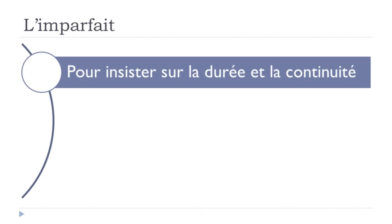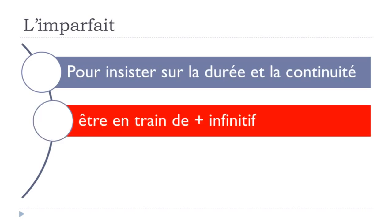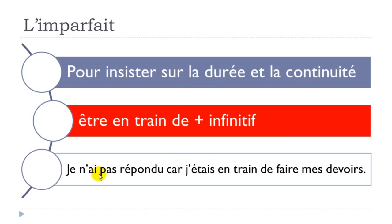To insist that something lasts and continues, we use the structure 'être en train de' plus the infinitive. For example, comparing passé composé and imparfait: 'je n'ai pas répondu' — 'répondre' means to answer — 'car j'étais en train de faire mes devoirs' — doing my homework. You use 'j'étais en train de' because it lasts; it's not something that takes one or two minutes.